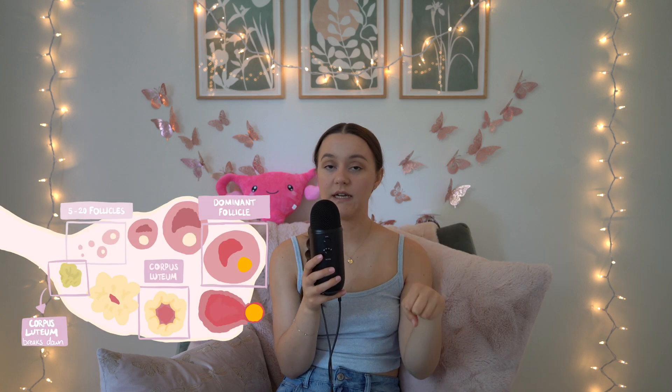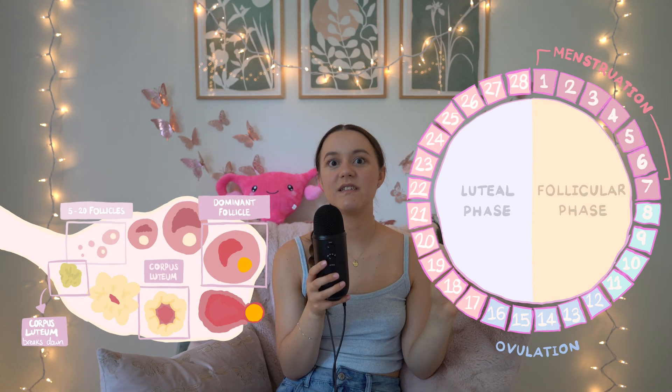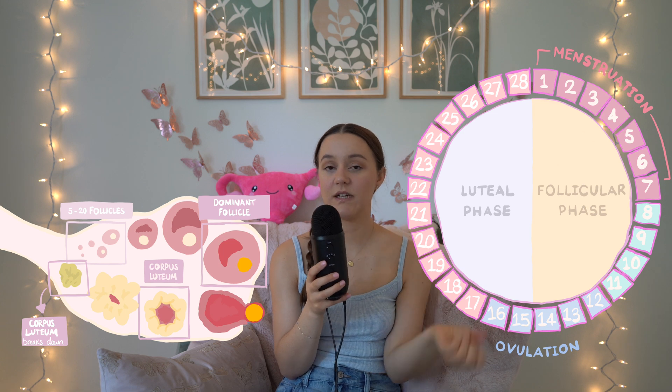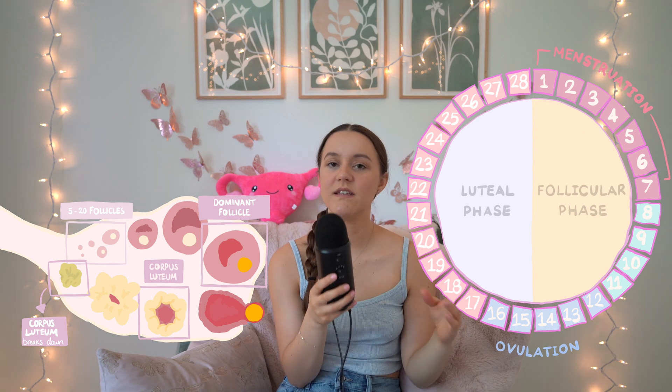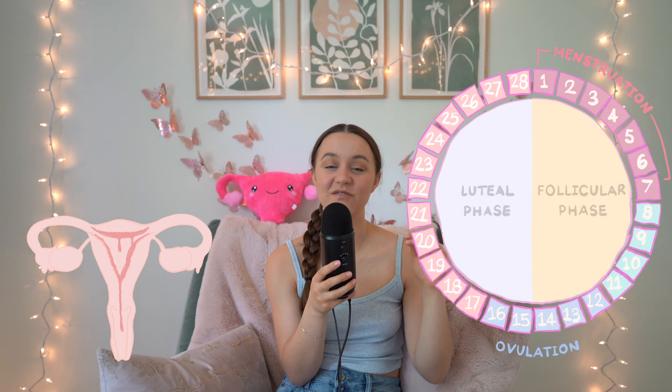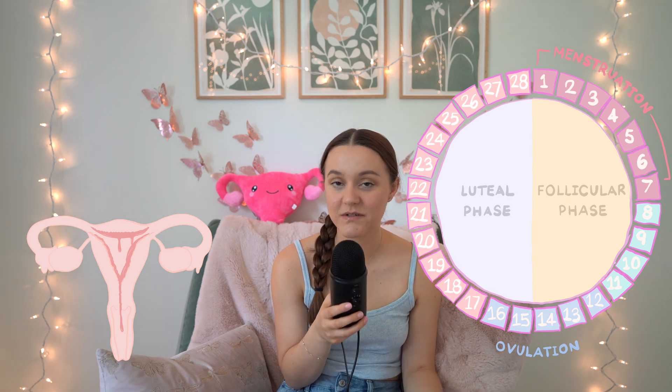Pregnancy doesn't just randomly happen — it happens through intercourse where a male's sperm fertilizes the egg you released. When an egg is not fertilized, the corpus luteum starts breaking down about 9 to 11 days after ovulation. It was releasing progesterone and estrogen, but now it's breaking down, and with that our hormones start to lower and drop. This is what causes your period to start again — this really low level of hormones — and once again you shed your uterine lining.